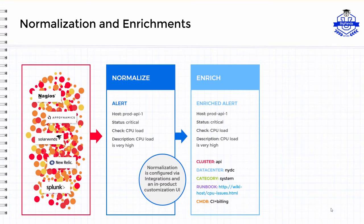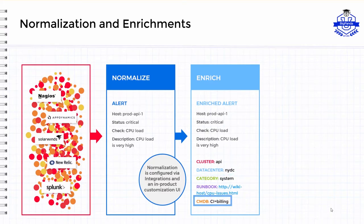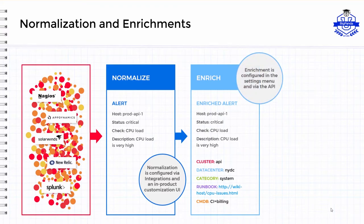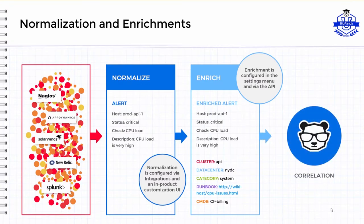Topological, to provide context on the physical and logical relationships between the alerting object and the rest of the infrastructure. Examples here would include cluster, data center, CMDB, and vCenter host. Enrichment is configured in the custom tags section of the settings menu and via the mapping enrichment section of the BigPanda API. After normalization and enrichment, the data is passed on to BigPanda's open-box machine learning for correlation. For more details, please watch our Getting Started with Normalization and Enrichments video.